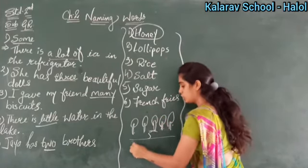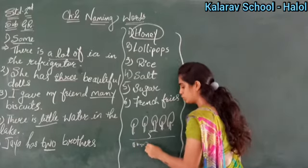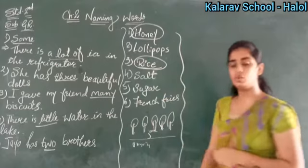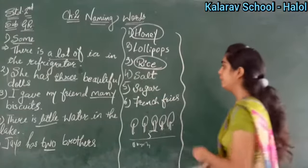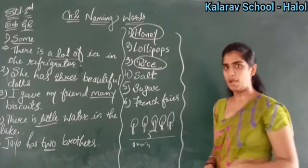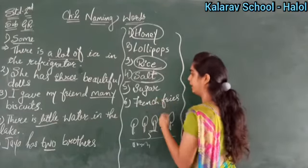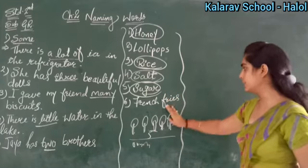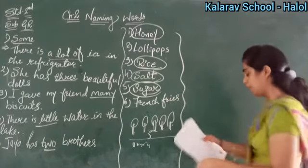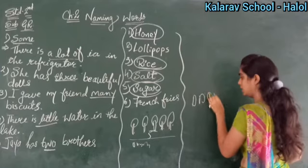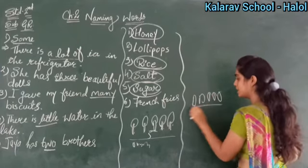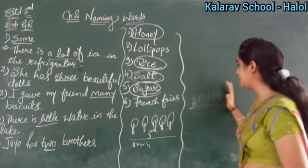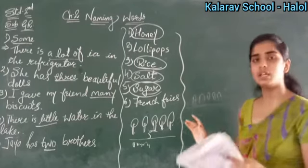Rice — the grains are tiny, so you cannot count rice. We cannot count chawal either. Circle it. Salt — we cannot count it. Sugar — we cannot count sugar. Circle both. French fries — you can count them: one, two, three, four, five. So French fries are countable — do not circle them. Circle the things you cannot count.